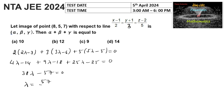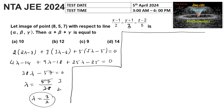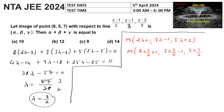So lambda = 57/38 = 3/2. Substituting lambda = 3/2 into the point M: x = 2(3/2) + 1 = 4, y = 3(3/2) − 1 = 7/2, z = 5(3/2) + 2 = 19/2. So point M is (4, 7/2, 19/2).